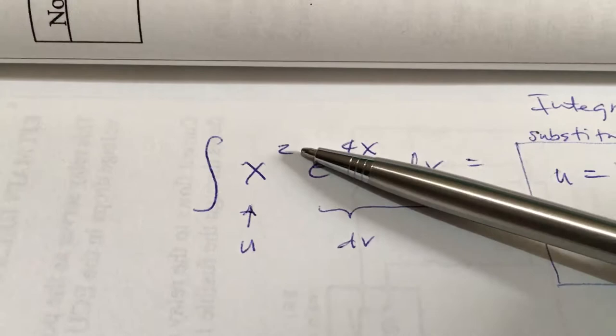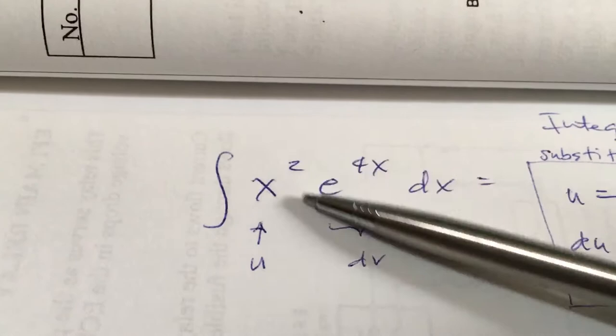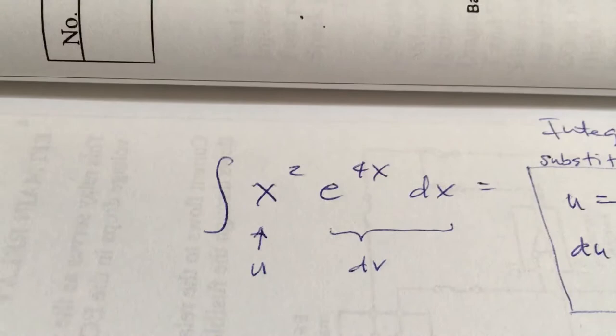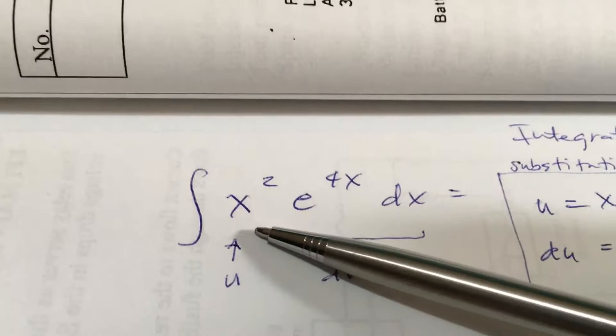In this video, I'm going to show you how to integrate x squared times e raised to the 4x dx. If you see a variable multiplied to e, or a variable multiplied to a trigonometric function like sine x or cosine x, we're going to use the integration by parts method.